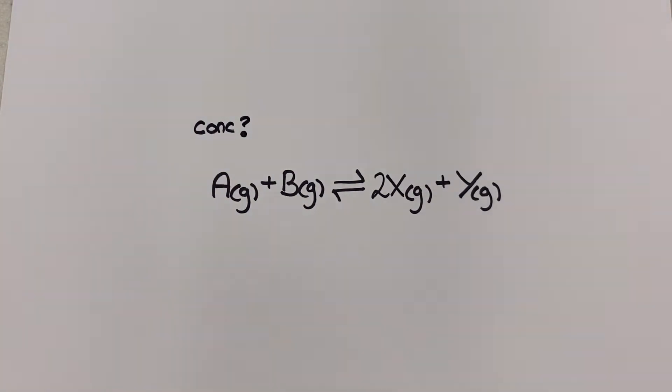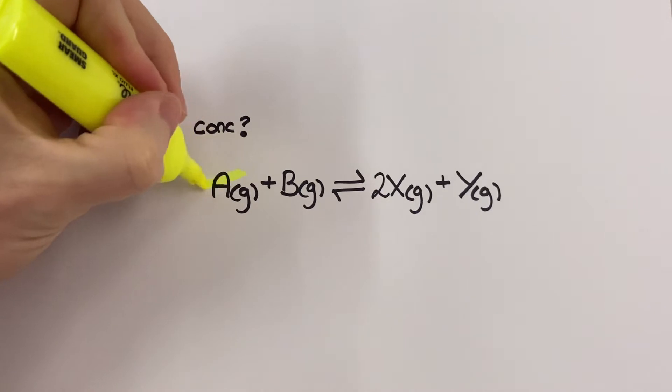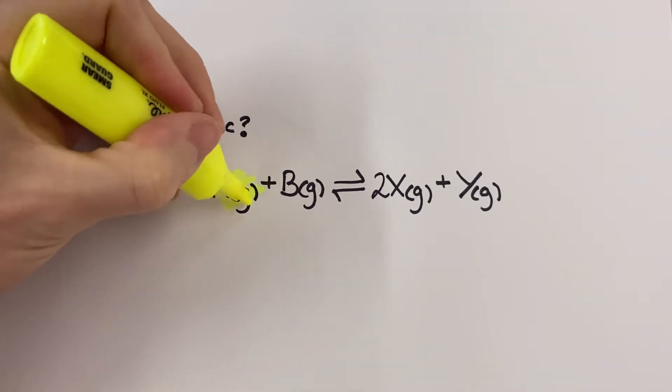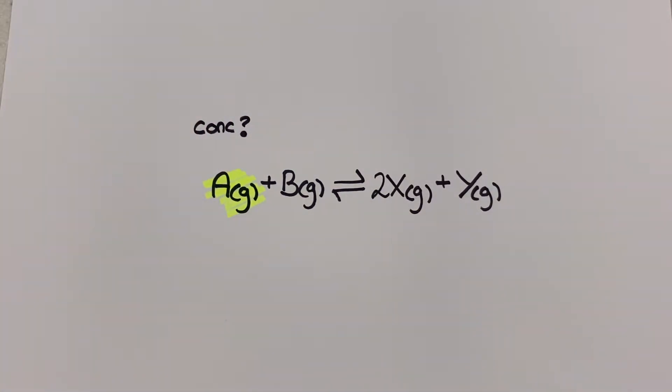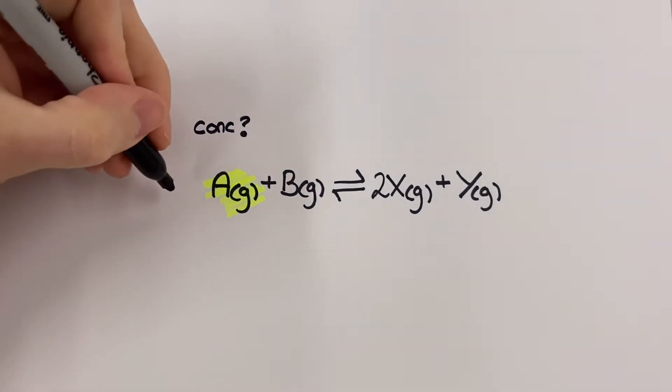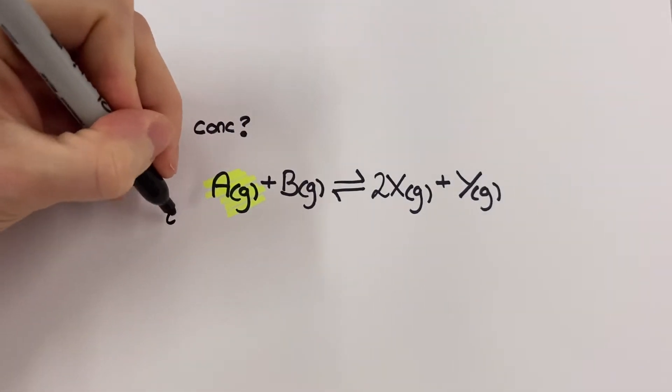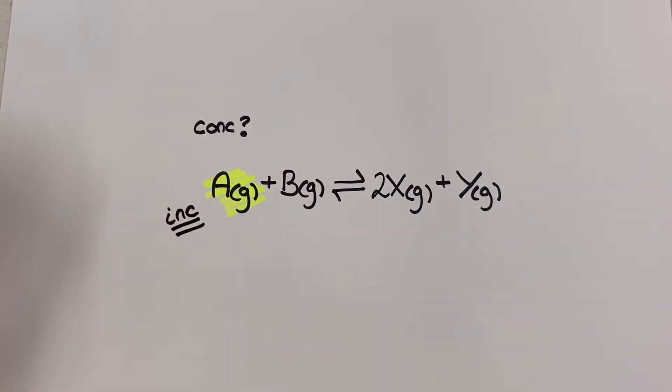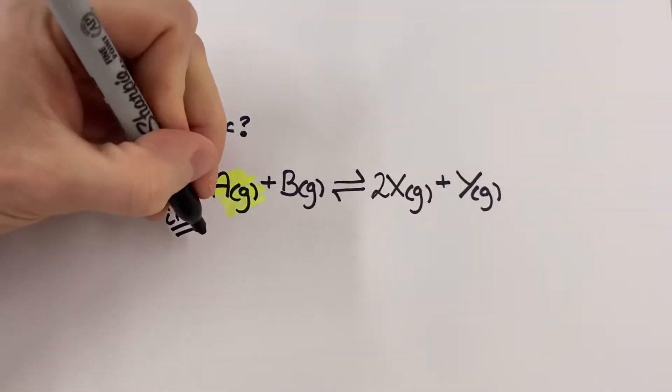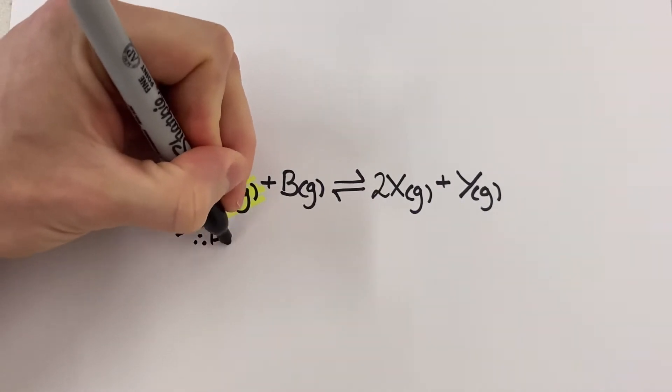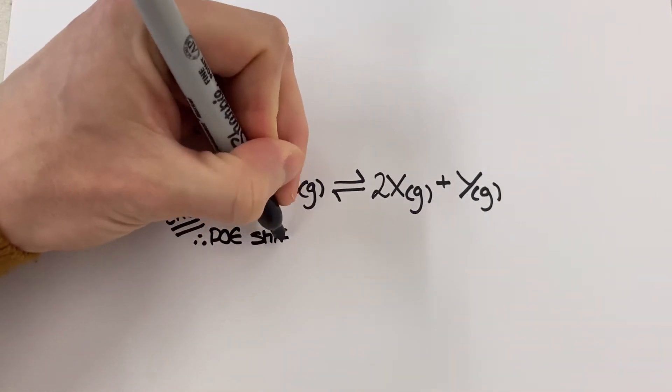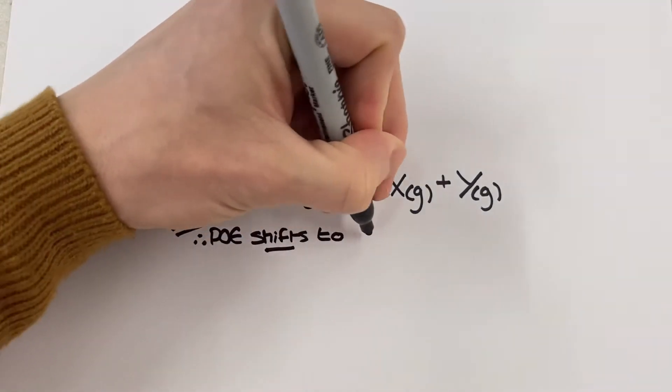All right then, so in this video I'm going to discuss how the position of equilibrium can shift in response to changes in concentration, pressure and temperature. I'll also include some extra info about catalysts at the end but the science there is a little different. Remember that a shift to the left will increase the proportion of reactants in the mixture and a shift to the right will increase the proportion of the products.